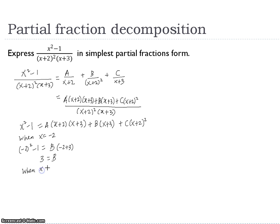This time, we substitute x equals negative 3. As you can see here, if x equals negative 3, it will cancel A and B and we can find C easily. Substitute into left and right side.